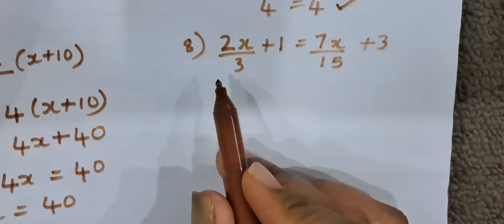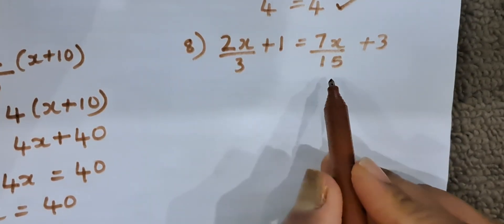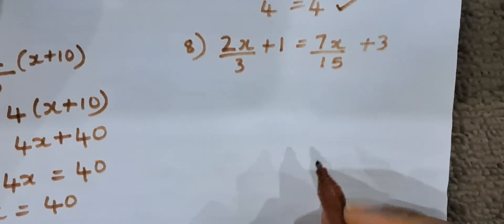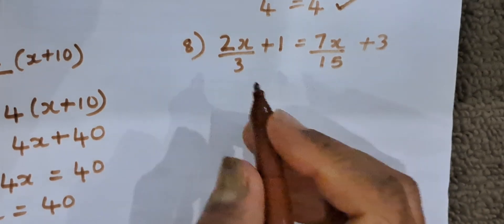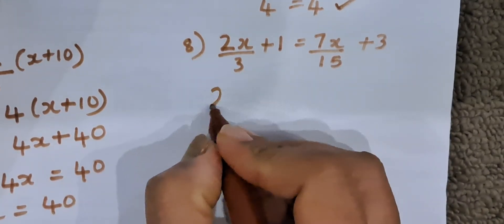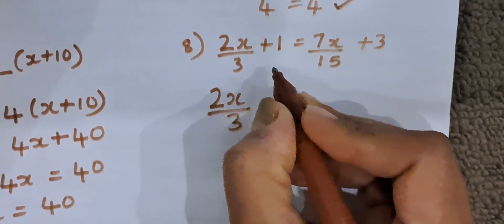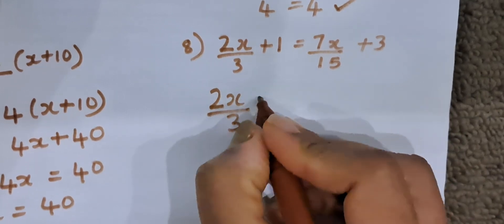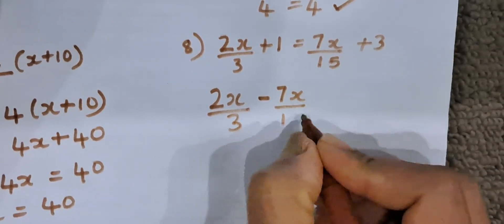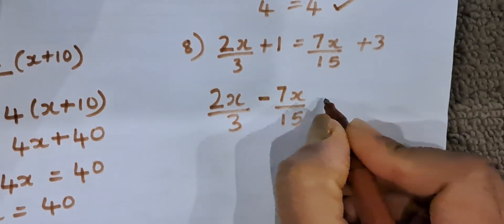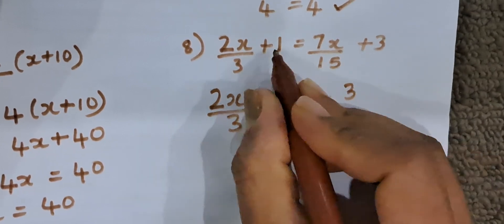Let us solve the eighth one. 2x by 3 plus 1 is equal to 7x by 15 plus 3. Now, we will take x terms on the left hand side. So, 2x by 3 as it is, and 7x by 15 comes on the left hand side as minus 7x by 15, equal to 3.